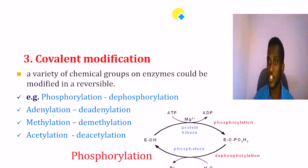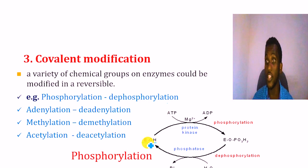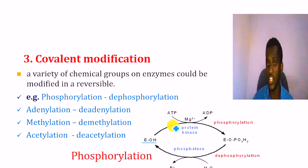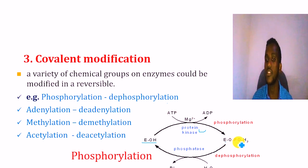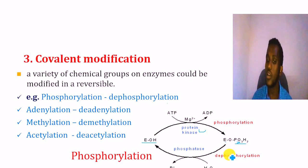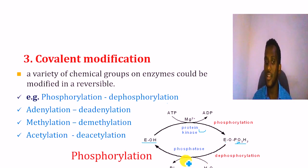In phosphorylation, an enzyme contains an OH group. Phosphate is added to the OH group using ATP as the energy source, forming a phosphorylated enzyme. In dephosphorylation, when the phosphate is removed, water is added and the phosphate is released, returning the enzyme to its original state.